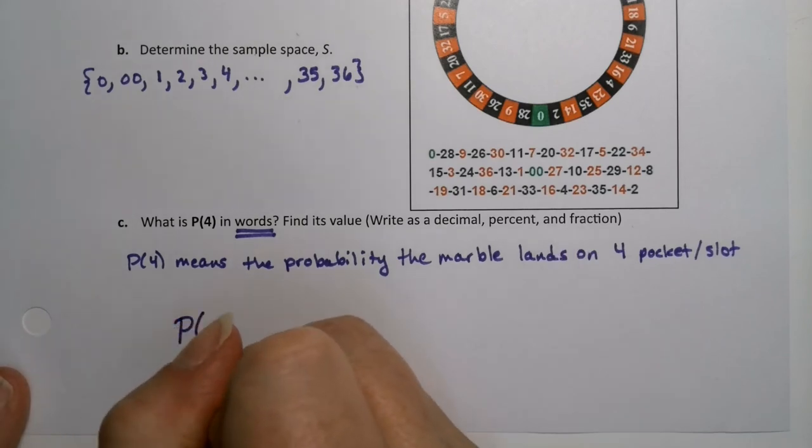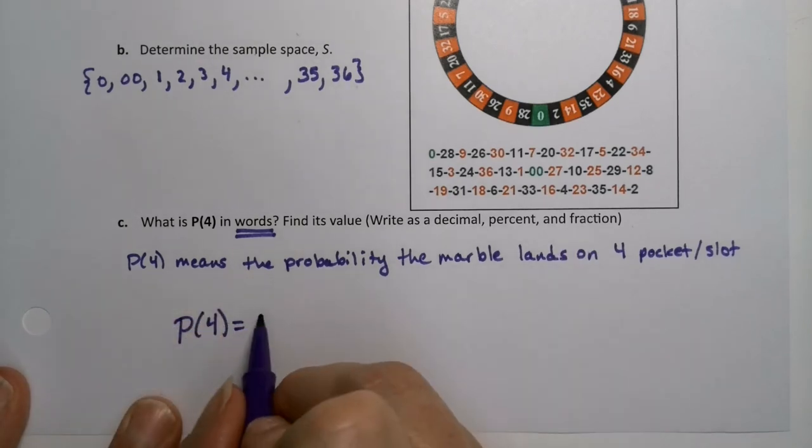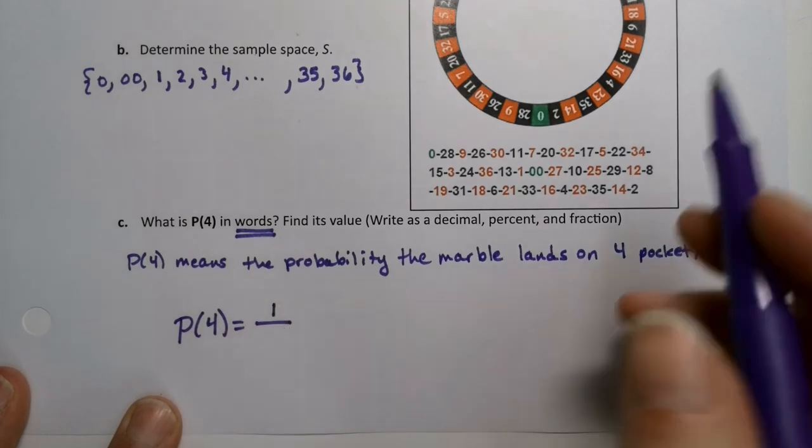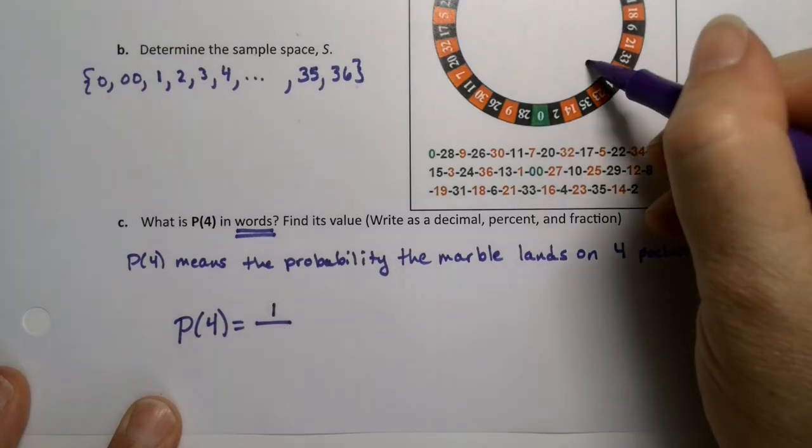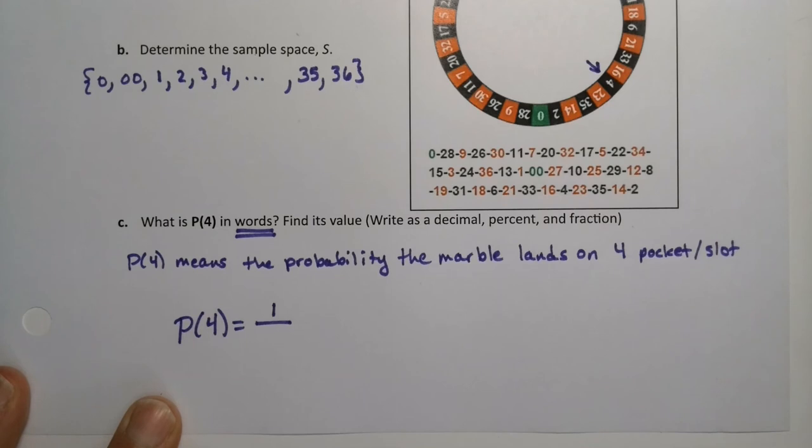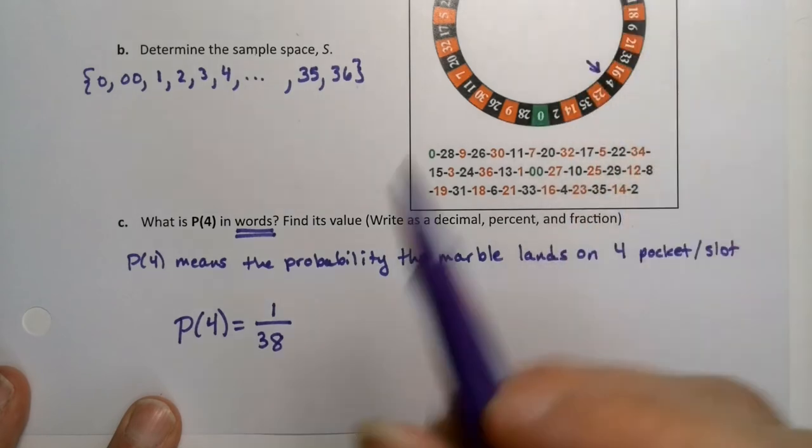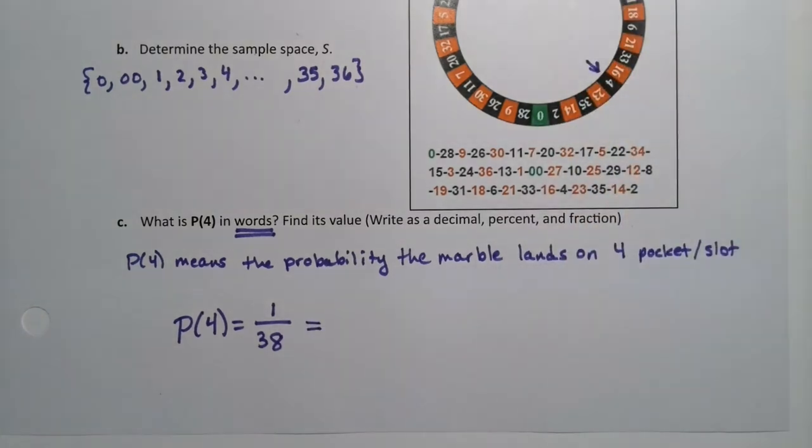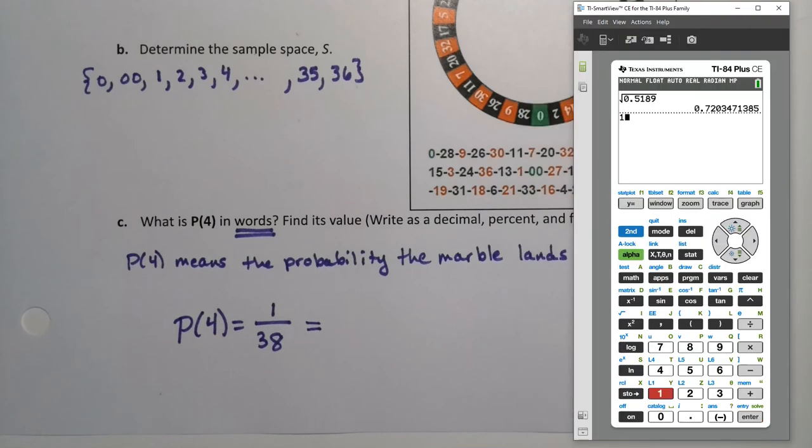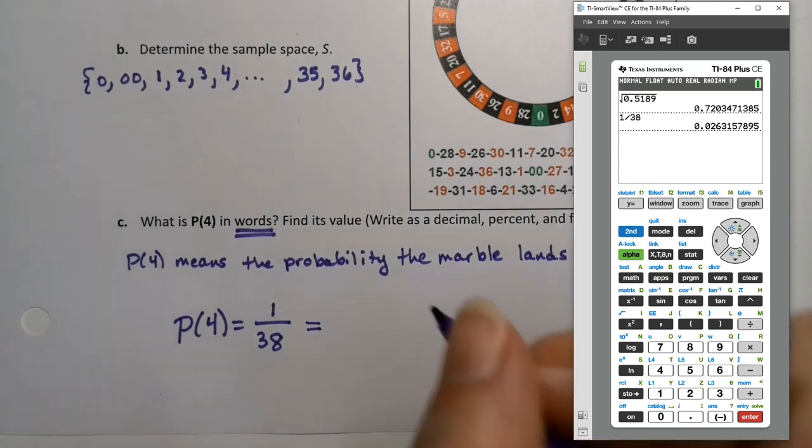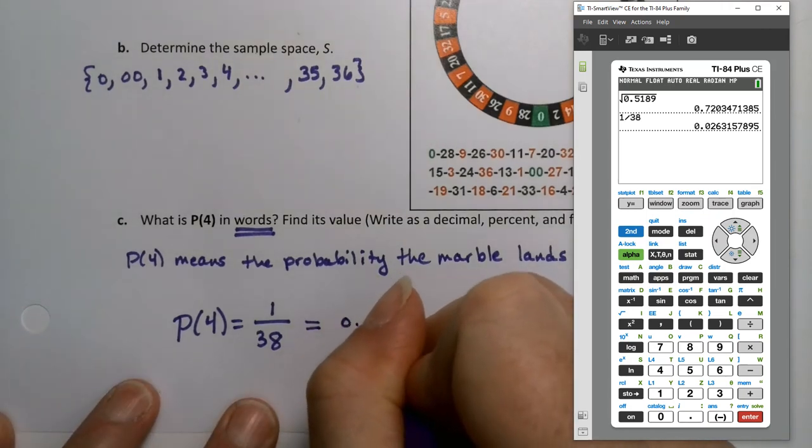P(4), mathematically, is 1. There's one spot that's 4, it's right here. There's the 4 spot. And it's out of 38 pockets total, because there's 36 plus green plus green, which makes 38. So that's 1 divided by 38, which would be 0.0263.